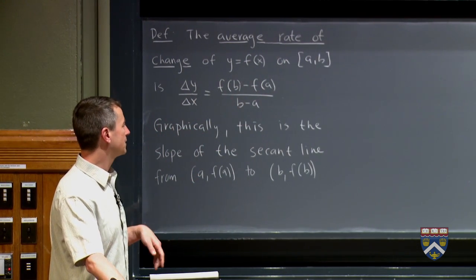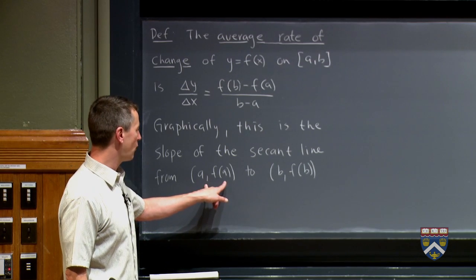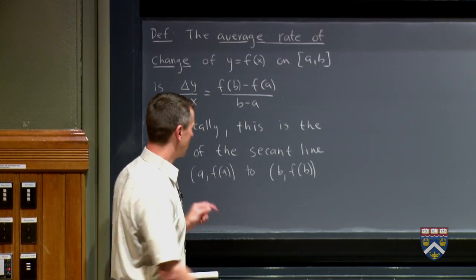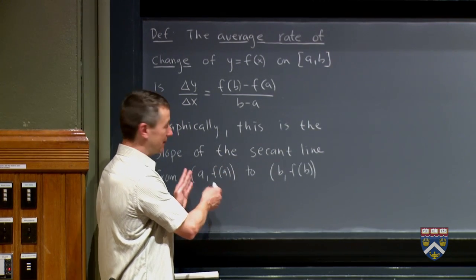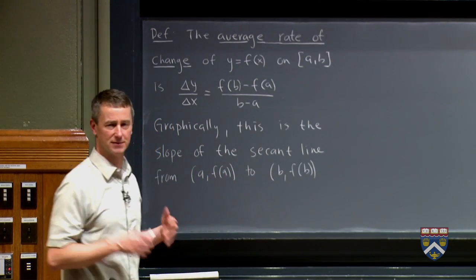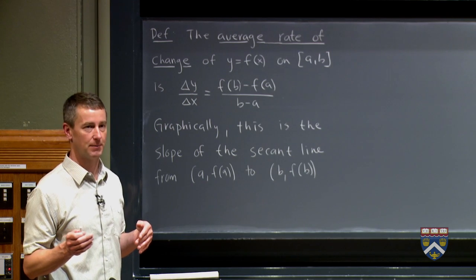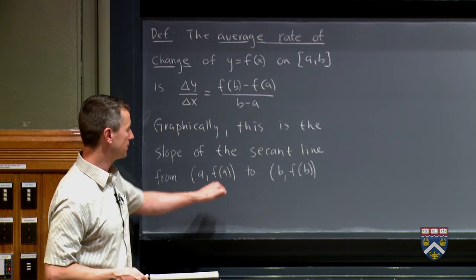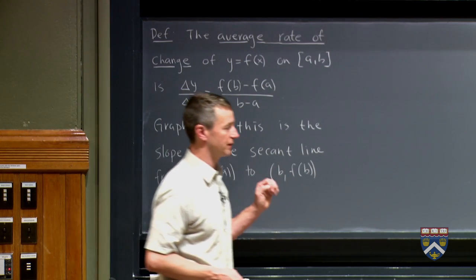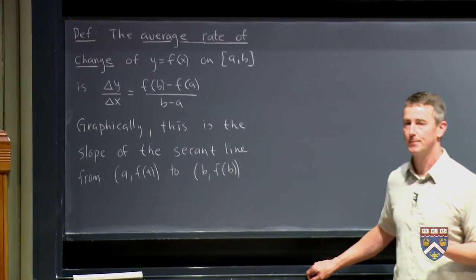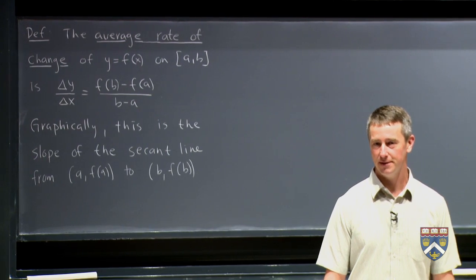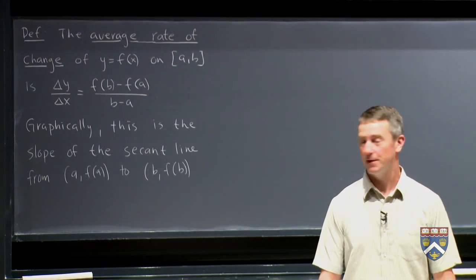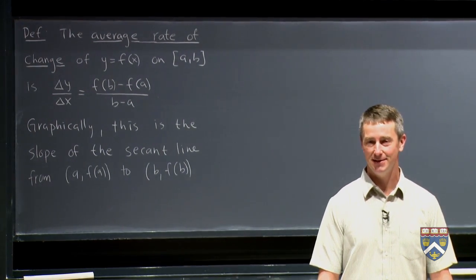And then graphically, this gives us the slope of the secant line from the point, from this point to this point. And now, you'll notice that these are actually points in the Cartesian plane. These are not intervals. You have to know from context whether you're talking about interval notation or about a point. But this is the starting point and this is the finishing point. And we're computing the slope between those two points. And that's average rate of change. We have a short little check your understanding for you to do on this. And then we'll go on to instantaneous rate of change.